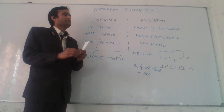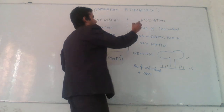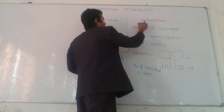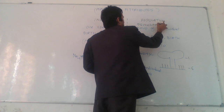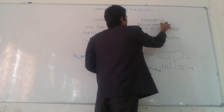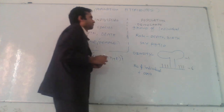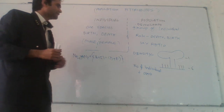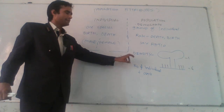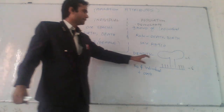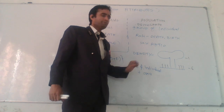The counting of the population is known as demography. Density of population is determined by the area of the plant and number of individuals.